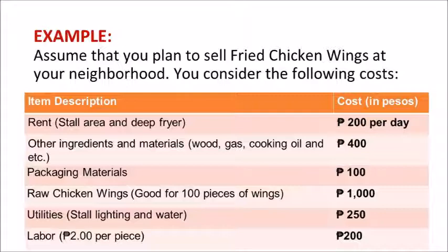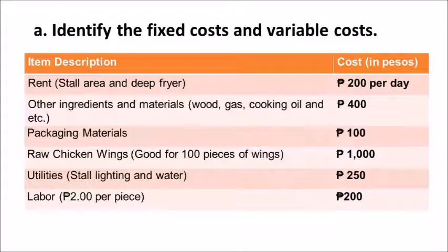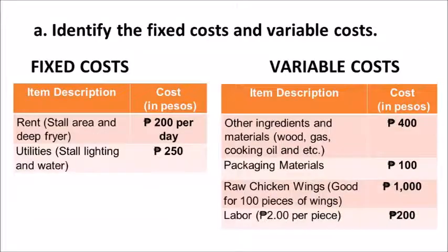Let's have an example. Assume that you plan to sell fried chicken wings at your neighborhood and you consider the following costs. From the example, the fixed costs are rent and utilities, because you have to pay these costs whether you produce fewer or more fried chicken wings — regardless of output, you still incur these fixed costs. On the other hand, the variable costs are raw chicken wings, cost for ingredients and other materials, packaging materials, and labor.